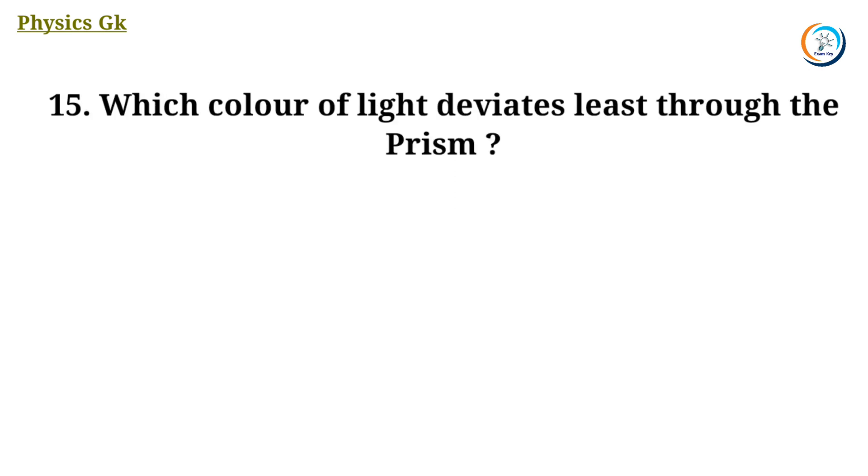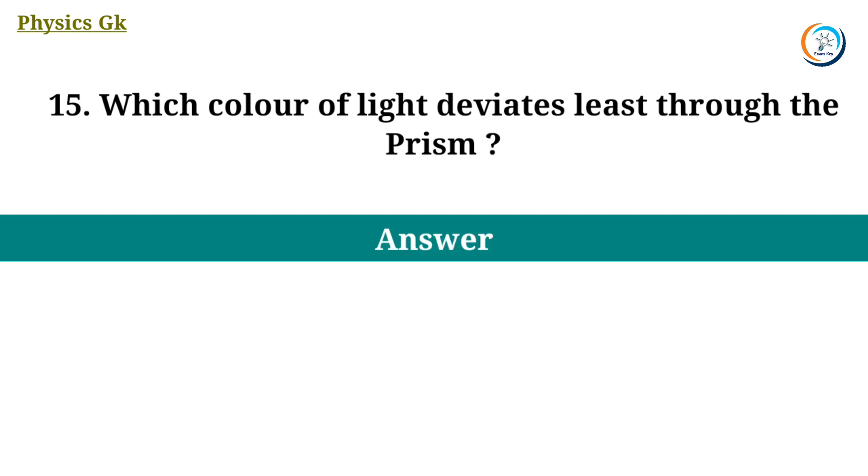Which color of light deviates least through the prism? Answer. Red.